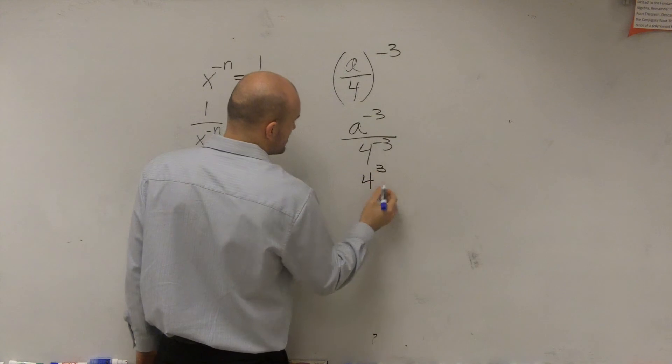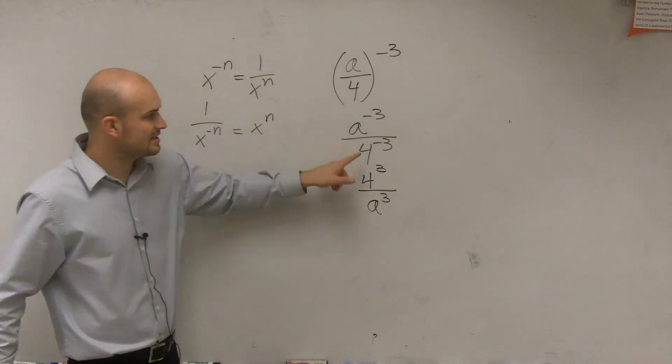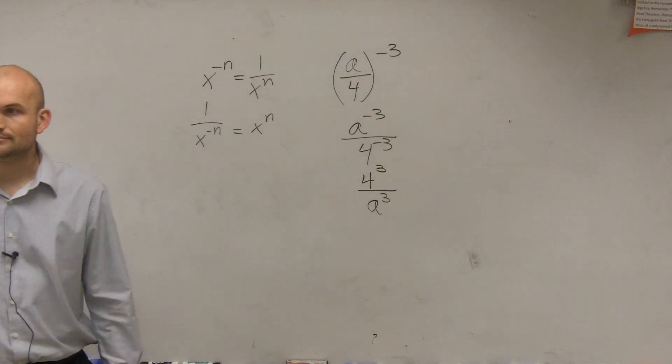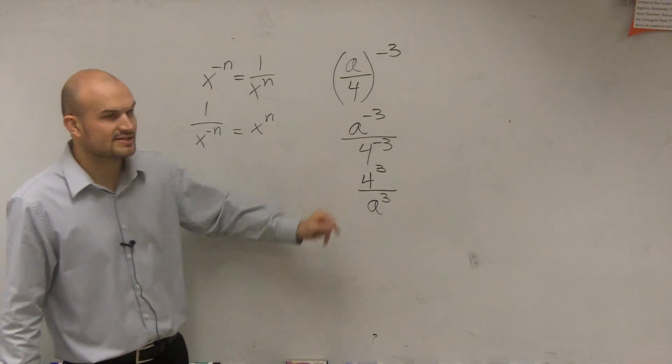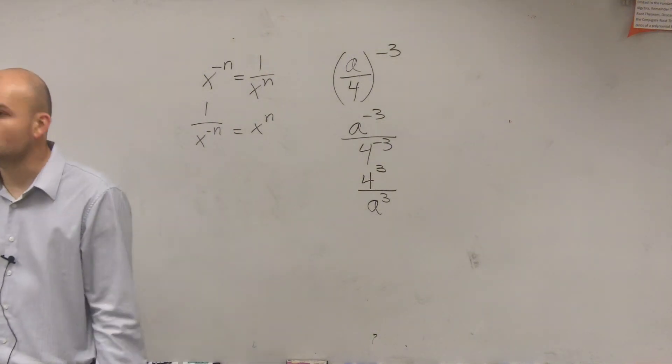I need to write it as 4 to the third over a to the third. So I'm going to put this in the denominator and put this in the numerator. Now I go ahead and simplify this. 4 cubed is 4 times 4 times 4, which is 64.